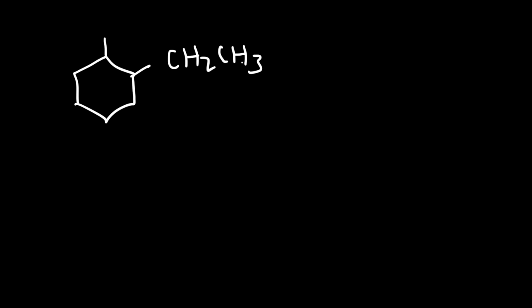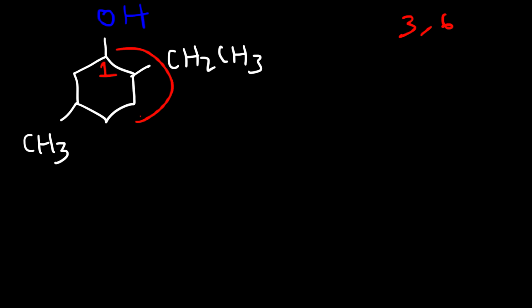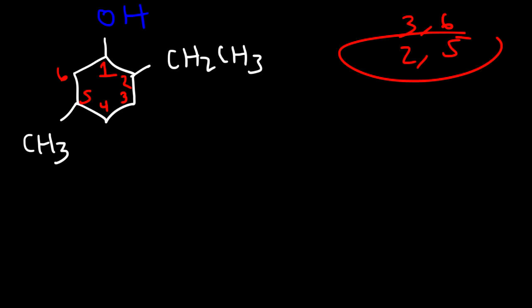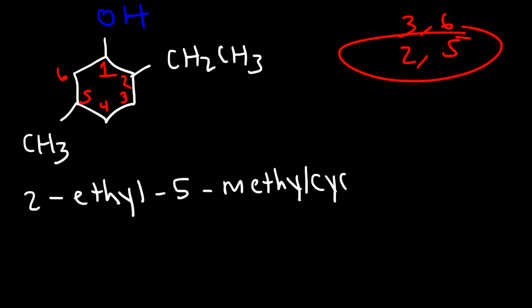Let's consider one more example with rings — go ahead and name this compound. The OH is automatically on carbon one. Counting counterclockwise gives the methyl on three and the ethyl on six. But counting clockwise, the ethyl group is on carbon two and the methyl group is on carbon five. Since two and five is less than three and six, we count in the clockwise direction. Putting it all together: 2-ethyl-5-methylcyclohexanol.